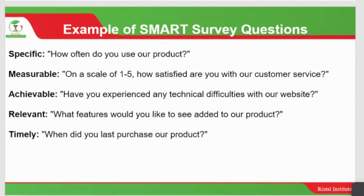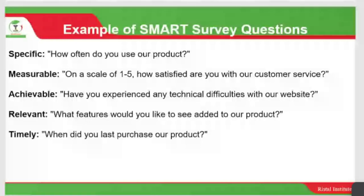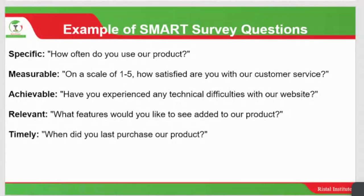Examples of SMART survey questions: for specific questions, an example is 'How often do you use our products?' You can go an extra mile and provide options for the person to choose from, and include an 'other, please specify' option. For measurable questions, use a scale from 1 to 5 or 1 to 10 to quantify responses — for example, 'How satisfied are you with our customer service?'